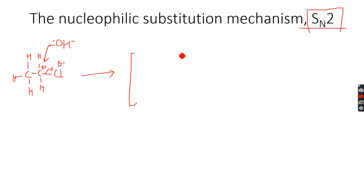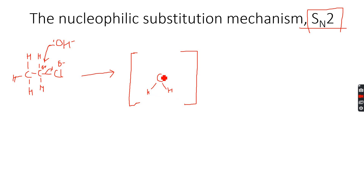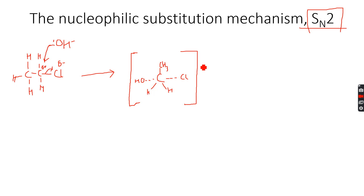Step one leads to the formation of an intermediate. In this intermediate, the delta positive carbon is attached to two hydrogen atoms and a CH3 group. It forms a half bond with the Cl and a half bond with the OH — so both are partial bonds at this stage.